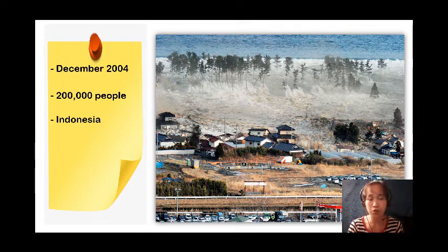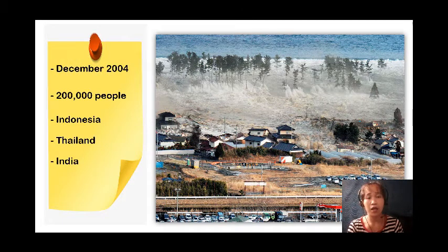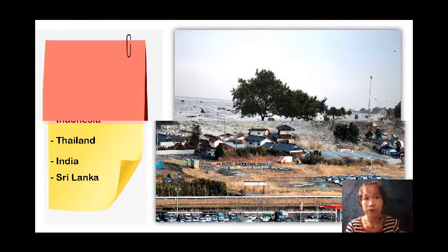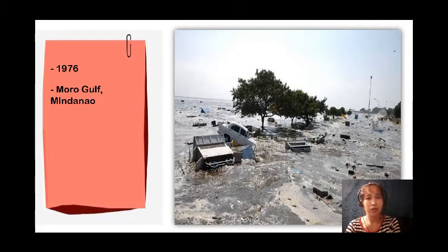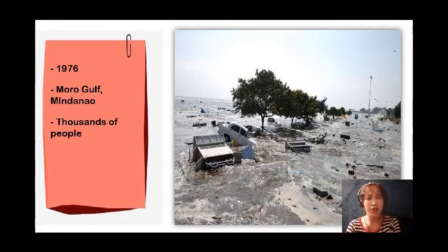In 1976, an earthquake took place in the Moro Gulf in Mindanao. Later on, a tsunami hit nearby coastal areas and thousands of people were killed, and many more were declared missing.